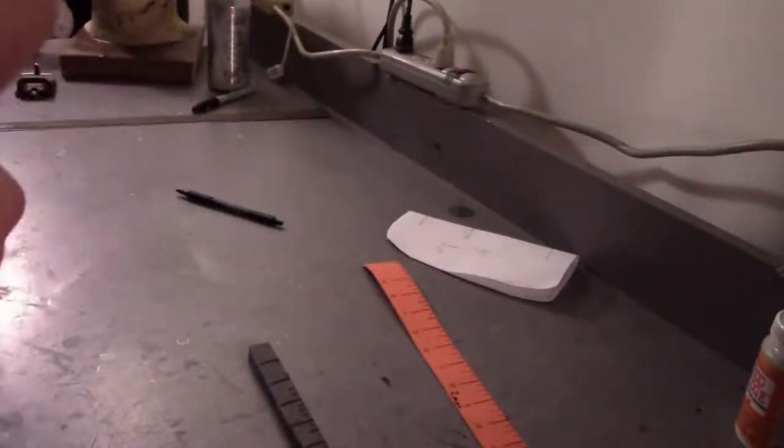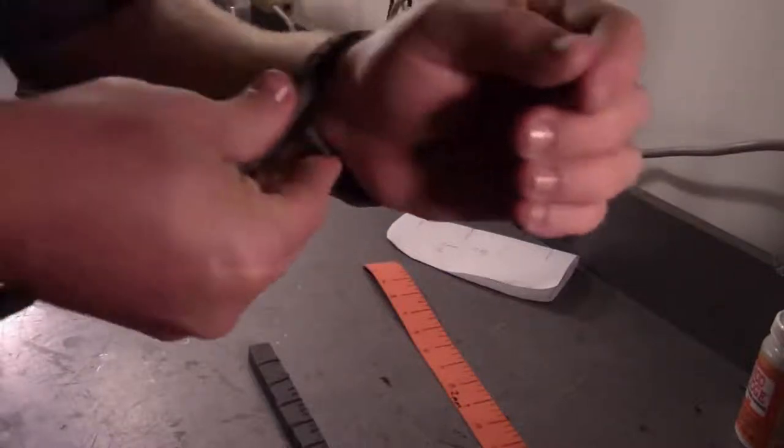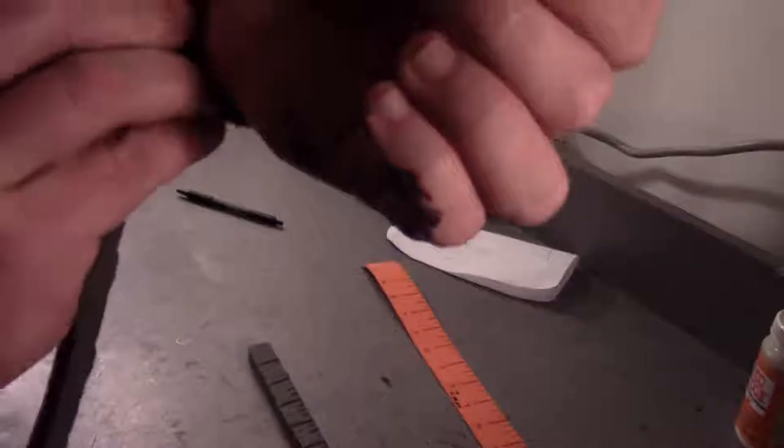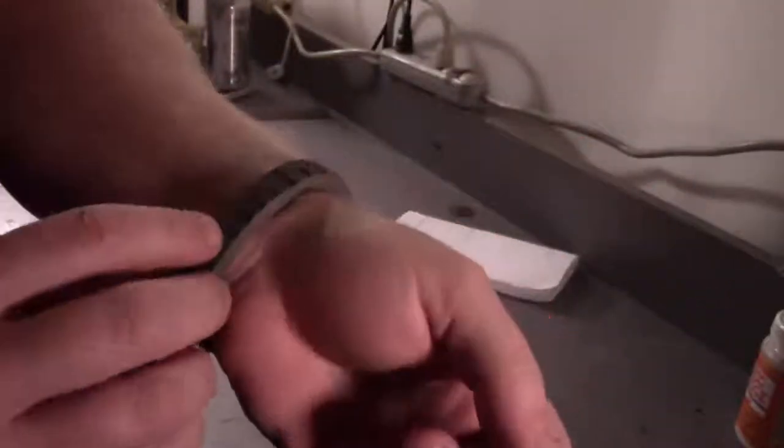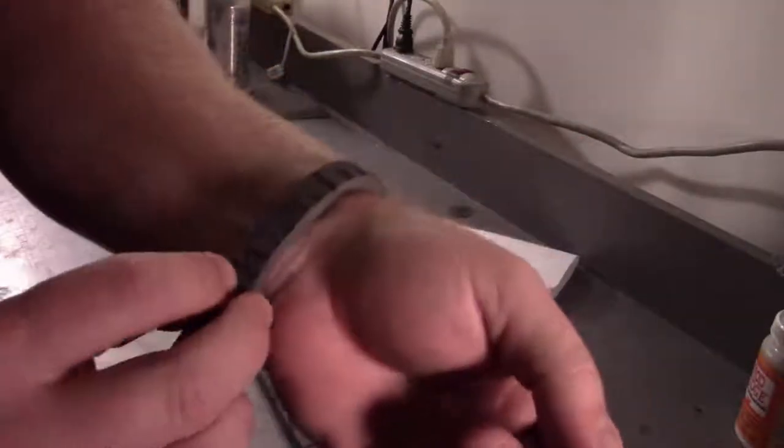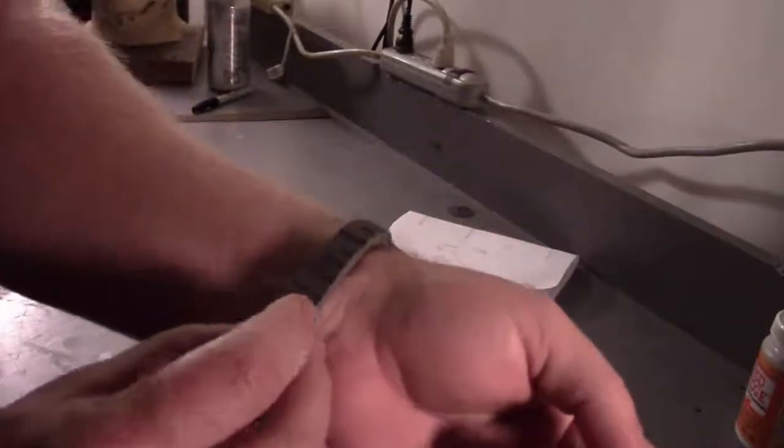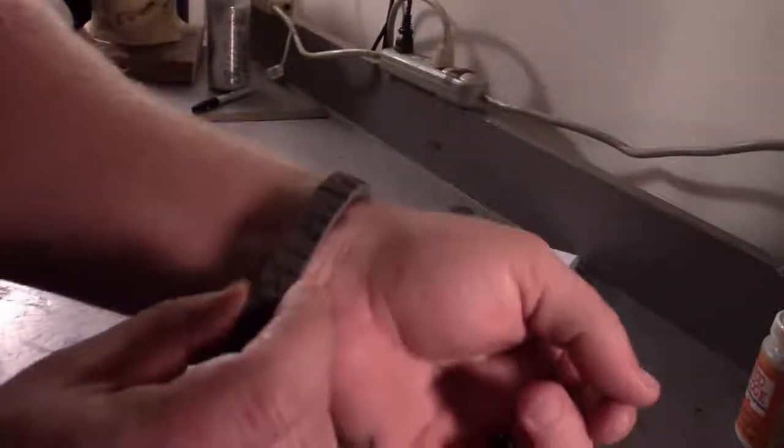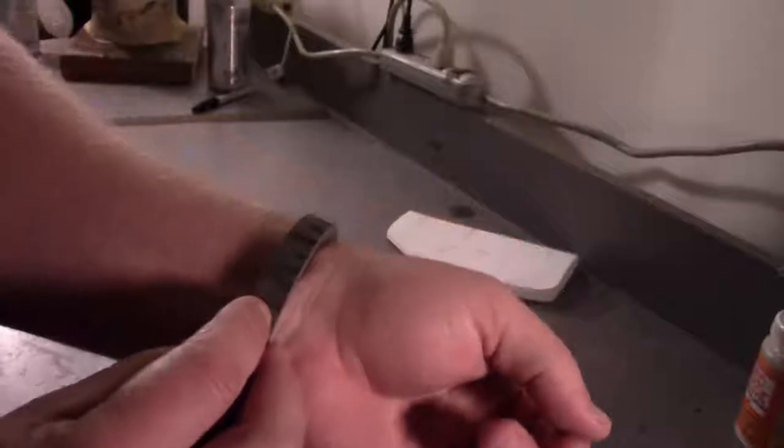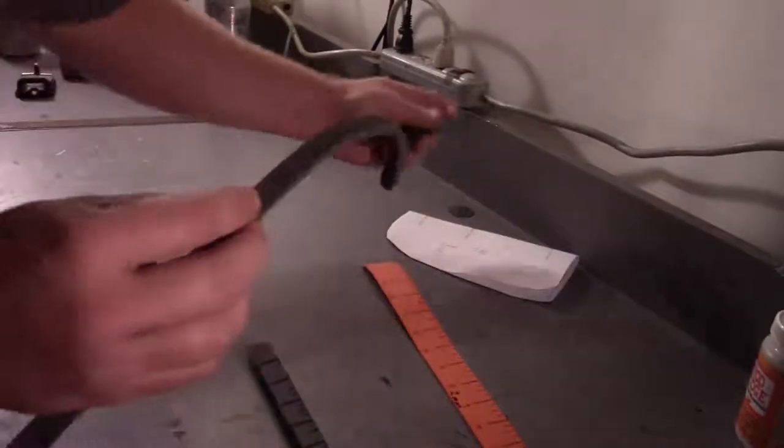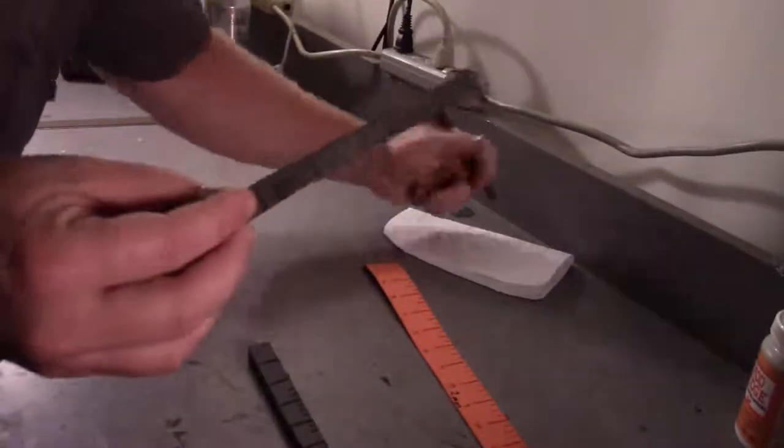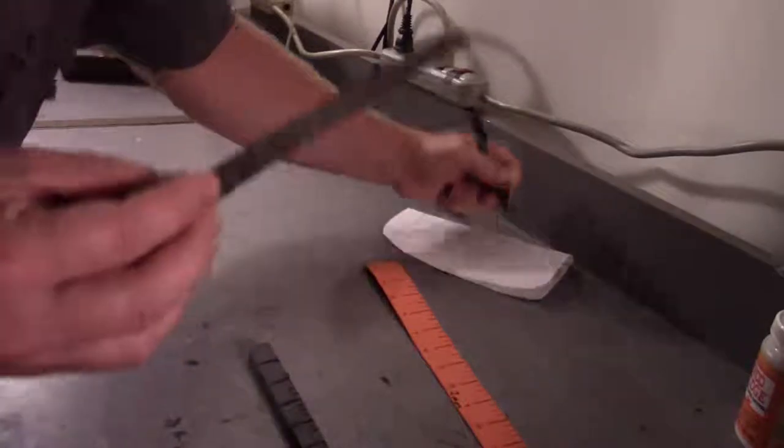So with the quarter inch piece wrapped around again, we're just going to go where it would touch, which would be right, right there. That comes in right at nine inches. So we've already come up another inch and a half using this by the time we went all the way around.